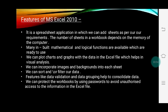Excel provides the sorting feature. Sorting means we can easily arrange our data in alphabetical order or in numerical order — like ascending or descending order. Filter means whatever data we want, we can easily filter it. The next feature: data validation and data grouping help to consolidate data.